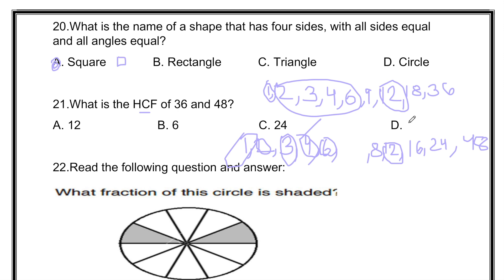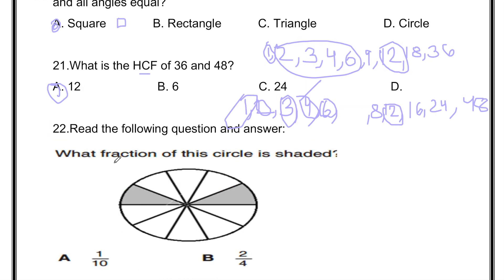All the common factors for 36 and 48 are 1, 2, 3, 4, 6, and 12. Now, from all these, the highest is 12, meaning the answer is A, 12. So we can do it from any method. I did it from prime factorization method. You can even do it from division method.